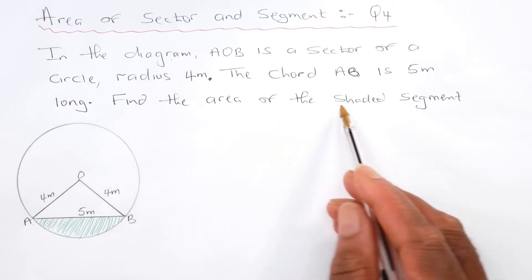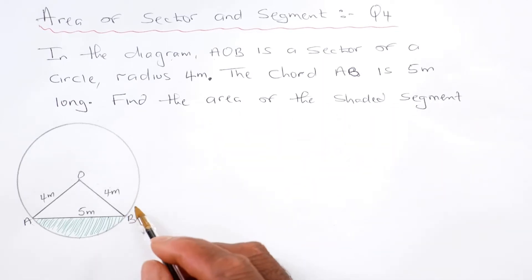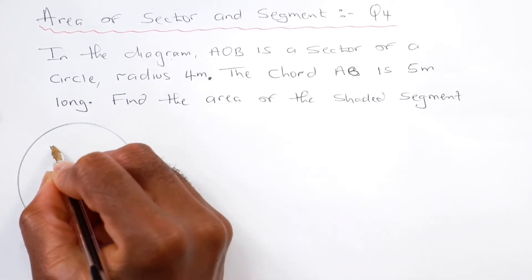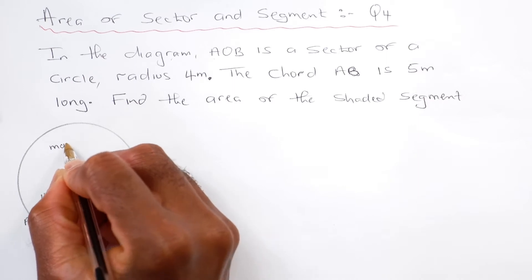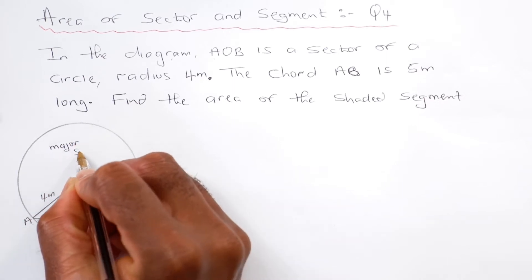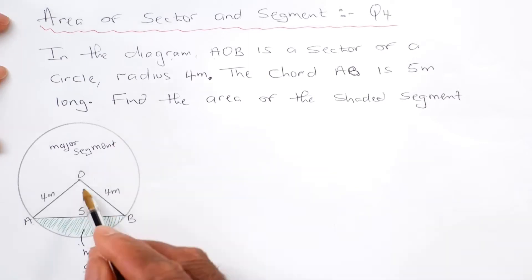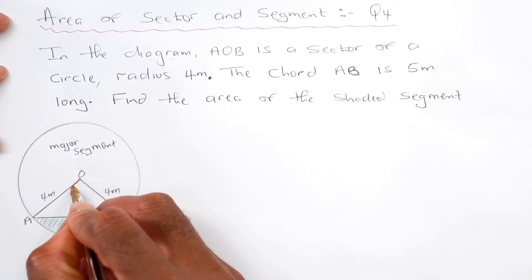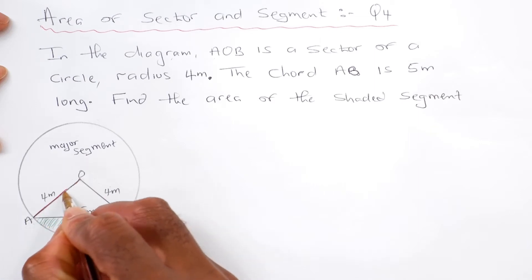Find the area of the shaded segment. As you know, this is the minor segment and this will be the major segment.